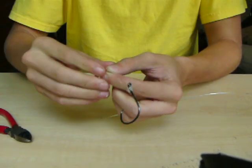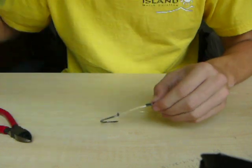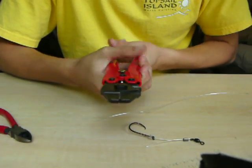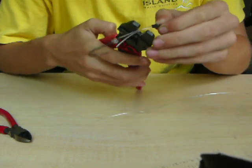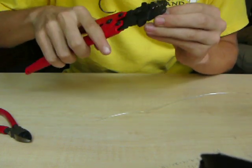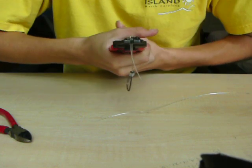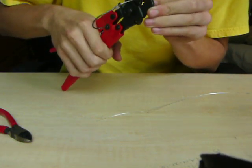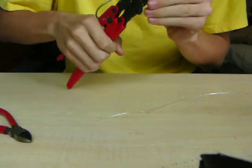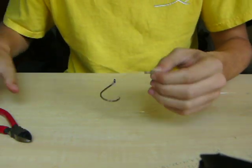Pull tight. And then what you're gonna need is a Bill Fisher crimper. Then you put it in there and crimp it down. There you go.